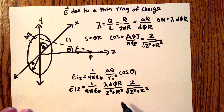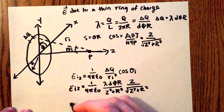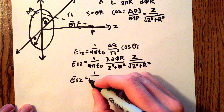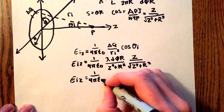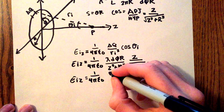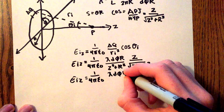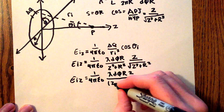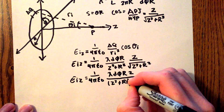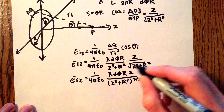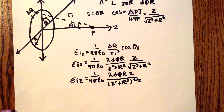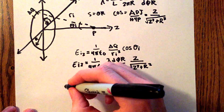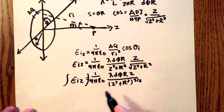Simplifying a bit, we can multiply these together and we'll have E_iz is equal to 1 over 4 pi epsilon naught times lambda d_phi r z over z squared plus r squared to the three-halves power — since the denominator was originally to the one-half and we add one more, giving three-halves.